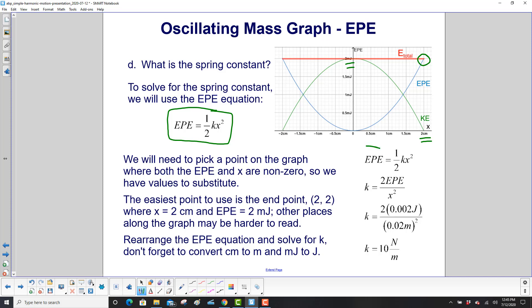So rearrange the EPE equation, and we want to solve for k. So you multiply both sides by two over x squared. That clears everybody on the right side, except for k, and then it puts a two over x squared next to the EPE.